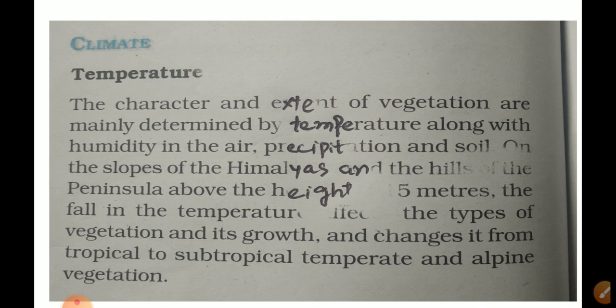Climate is also a major factor affecting the natural vegetation of an area. The characteristics and extent of vegetation are mainly determined by temperature, along with humidity in the air, precipitation, and soil type.